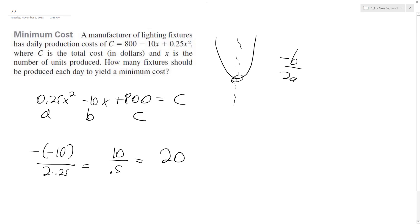And then you plug that in for x. They're not asking that, but you plug in 20 and that will give you your minimum cost. So 20 units per day.